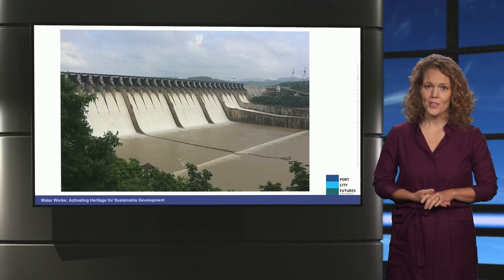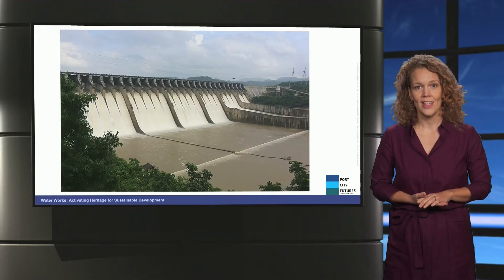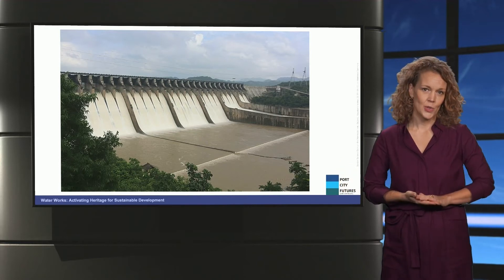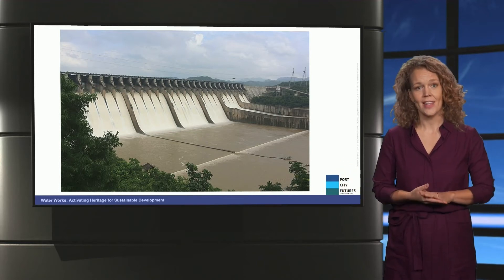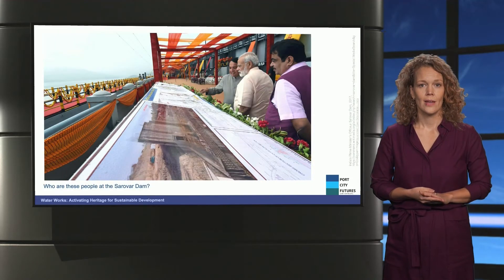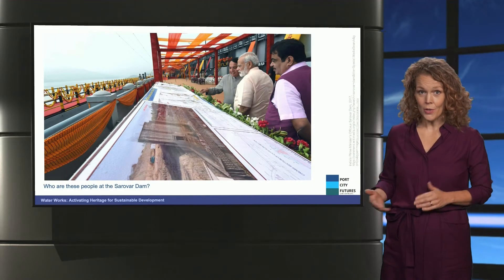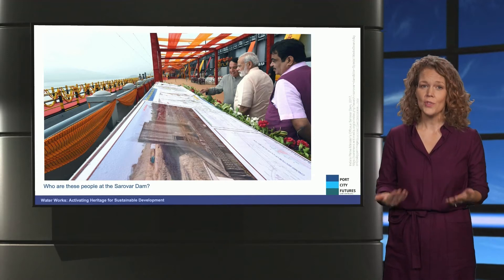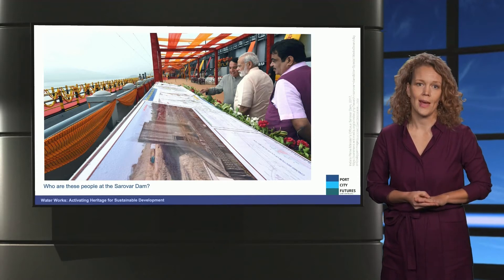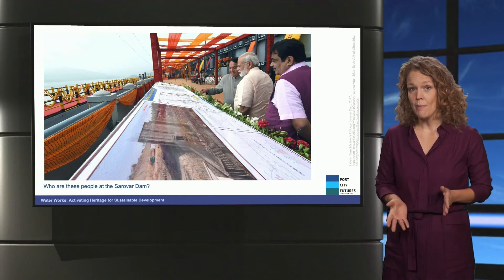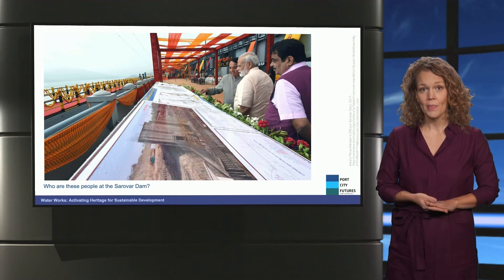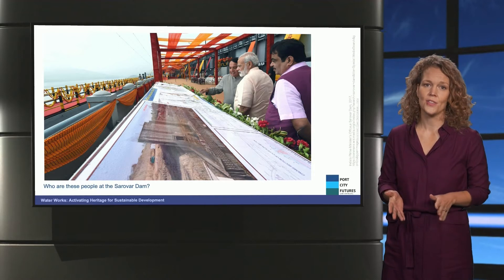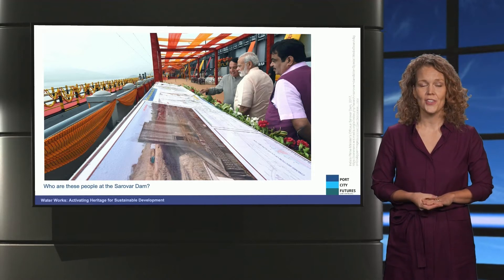Let's go back to the Sarava Dam in Gujarat, India. In this photograph you don't see anything related to who is using or maintaining the dam. In this photo we are also at the dam. Now we don't see the dam directly, but we do see some people interacting with the dam. We see three men dressed smartly. It is clearly an official occasion — we see flowers and garlands, empty ceremonial chairs and cards.